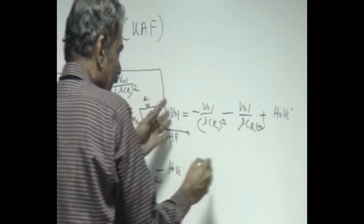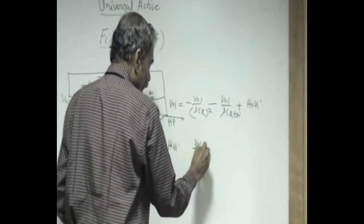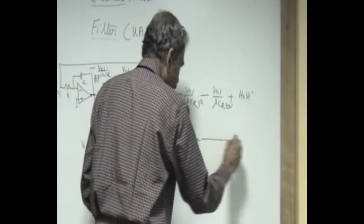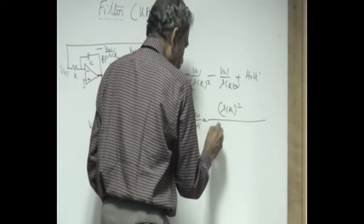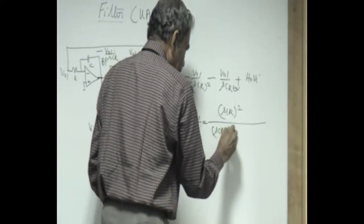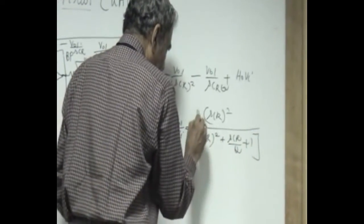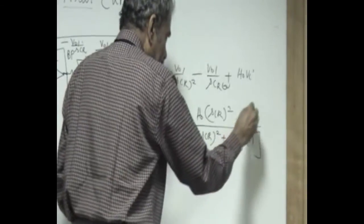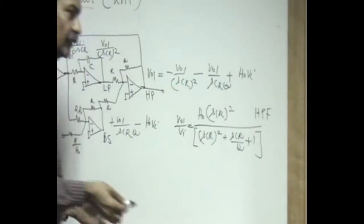So now collecting the coefficient of V naught 1 we get V naught 1 by V_I as SCR square by SCR square plus SCR by Q plus 1 into V_I. This is called high pass filter or second order high pass filter.